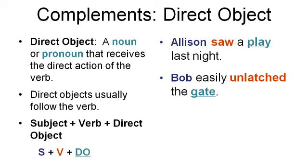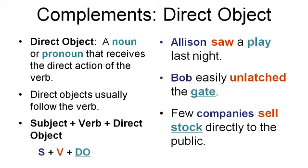Bob easily unlatched the gate. Bob is the subject. Easily is an adverb, just FYI. Unlatched is the verb and gate is the direct object — because what did Bob unlatch? He unlatched the gate. So gate is the thing that receives the direct action of the verb. Few companies sell stock directly to the public. Companies is the subject. Sell is the verb. What do few companies sell? Stock. Stock is the direct object because it is the thing that is sold.